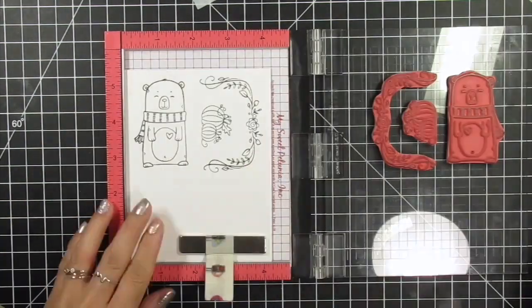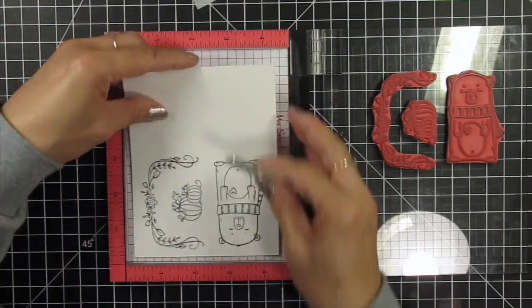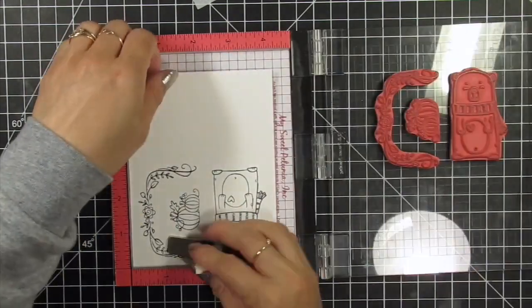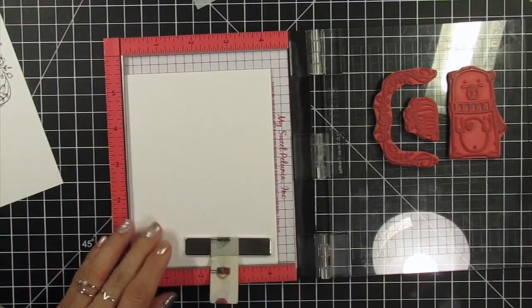Normally I would just turn my panel and stamp it again, but these take up just over half the panel, so I'm just stamping the images on two different panels.